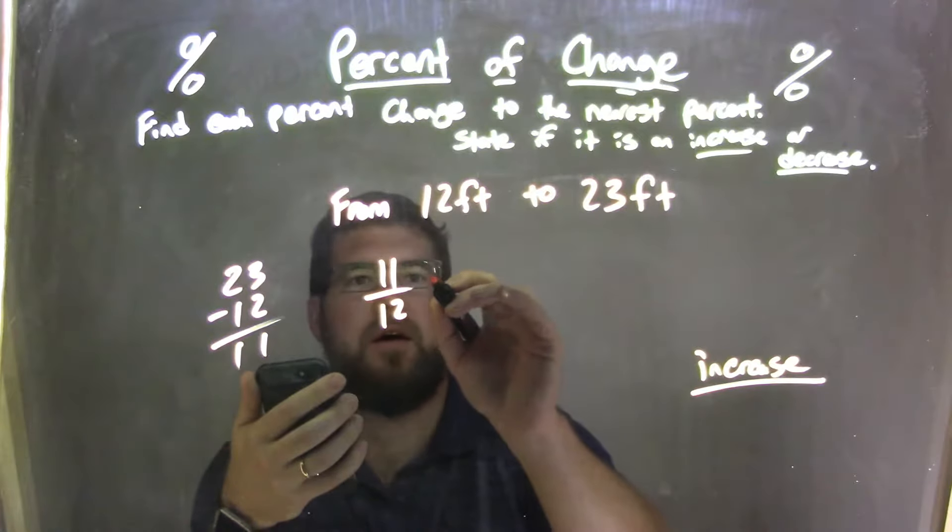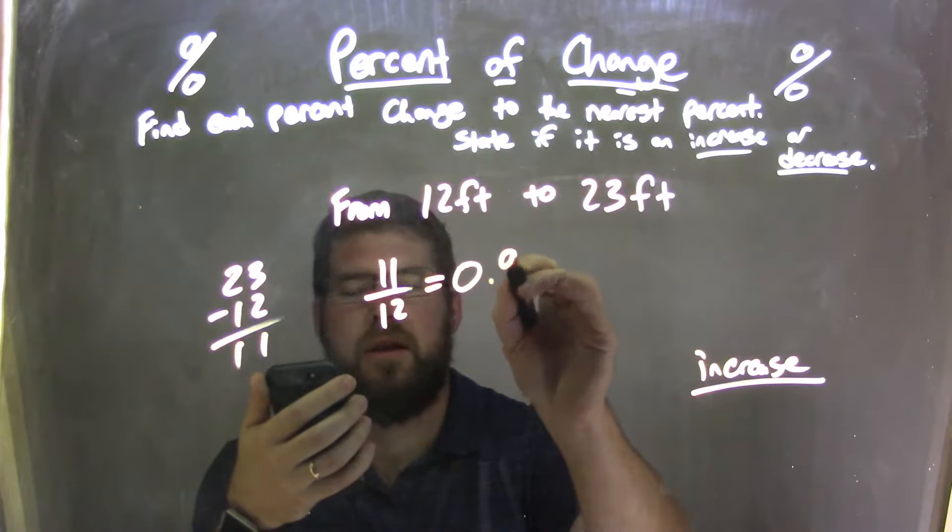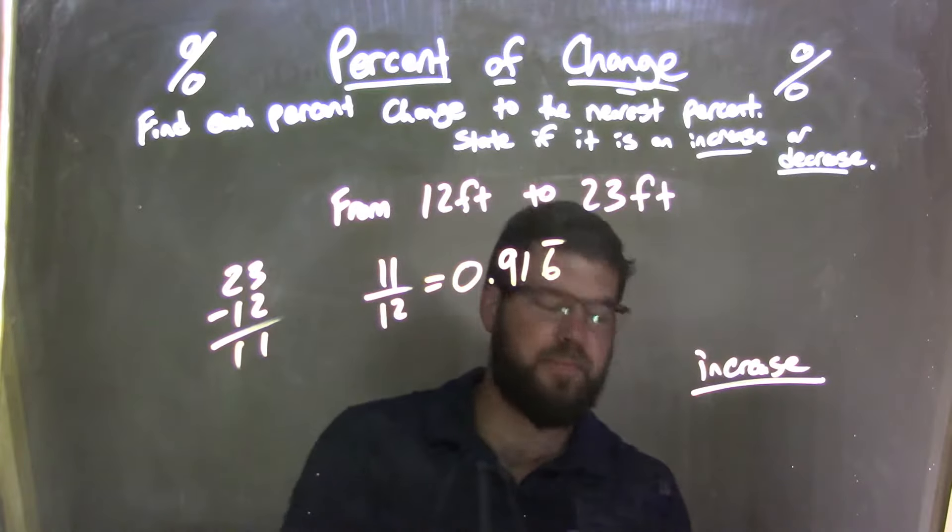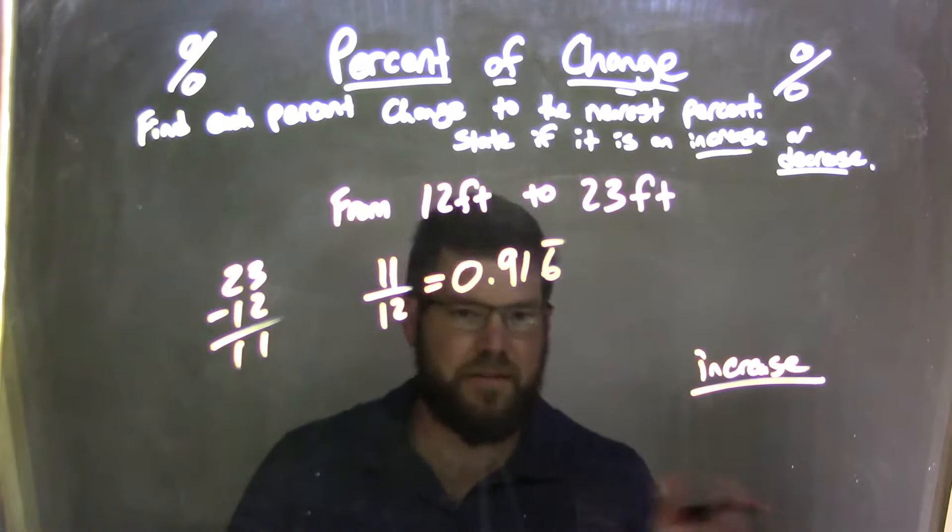We have 0.916 repeating forever - 0.916666 and so on.